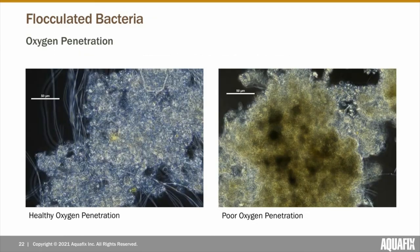We're able to analyze how well oxygen is penetrating flock by looking at their color using our phase contrast lens. When flock are white or tan, it's an indication that there are healthy levels of oxygen penetration. However, if flock appear darker brown or black, it's an indication of poor oxygen penetration, and septic regions will start to appear within the flock structure. If we see small flock that aren't very condensed but they are brown or black, it can be an indication that DO levels are too low, prohibiting sufficient oxygen penetration.